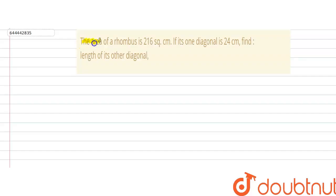In this question, the area of a rhombus is 216 square centimeters. If its one diagonal is 24 centimeters, then we need to find the length of its other diagonal.